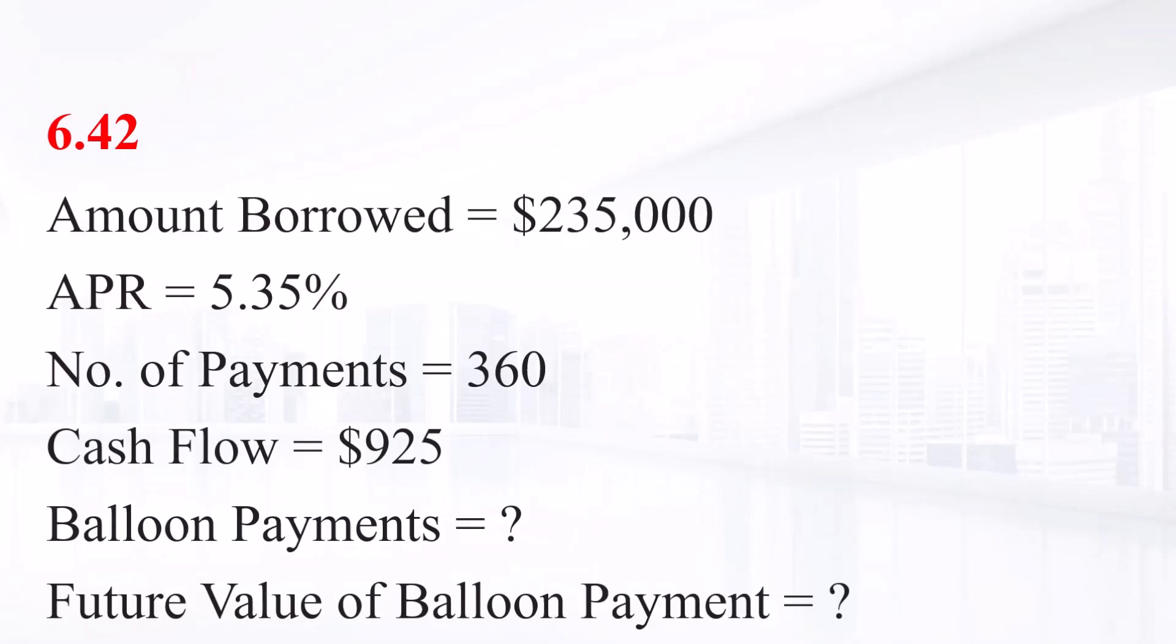You need a 30-year fixed rate mortgage to buy a new home for $235,000. Your mortgage bank will lend you the money at an APR of 5.35% for this 360-month loan.